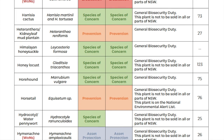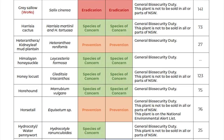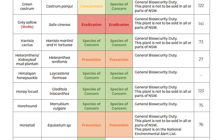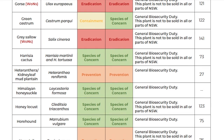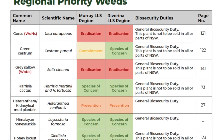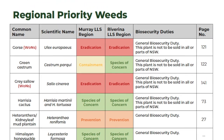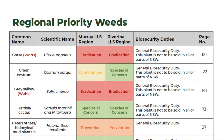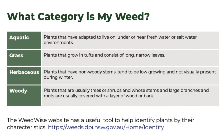This table lists all of the priority weeds alphabetically and provides their priority status and page number to find more information. The weeds have been categorised as aquatic weeds, grassy weeds, herbaceous weeds and woody weeds.